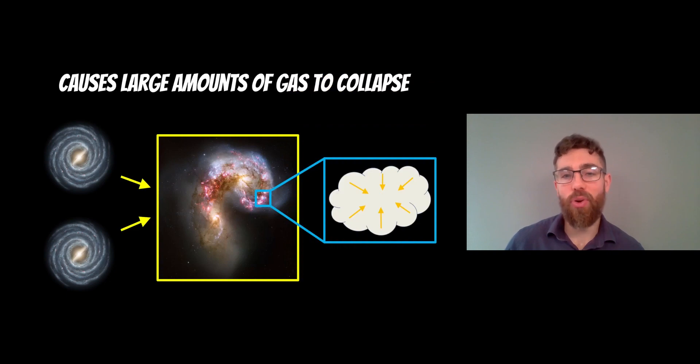Now, what happens during this process is that large amounts of gas that was in the spiral galaxies collapses all at once. So normally in a spiral galaxy that's not gravitationally disturbed, you get the star formation, they go through the spiral arms, the gas collapses, you get stars forming.